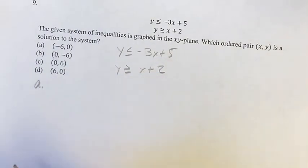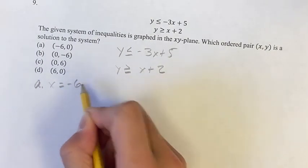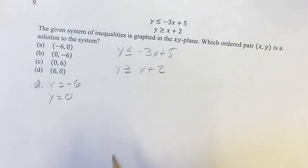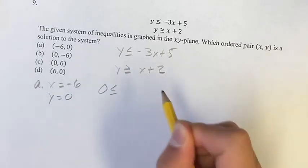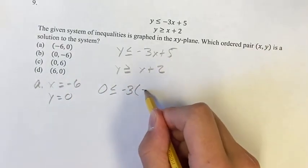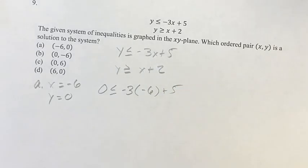We'll see what I mean. We can start with a, plugging in negative 6 for x, 0 for y, and we'll see if these are true. So if y is less than or equal to, so it's going to be 0 is less than or equal to negative 3 times x is negative 6 plus 5.